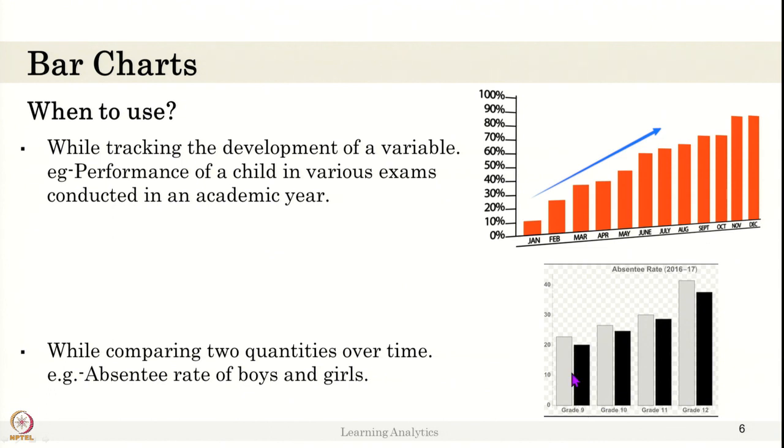Here, the boys data is in a light gray color and black color is the girls data. So you can compare this data. We can say consistently, the absent rate has been across grades, it is higher for boys and class 9 students' absent rate is less compared to the class 2 students. So you can infer more information from this graph.